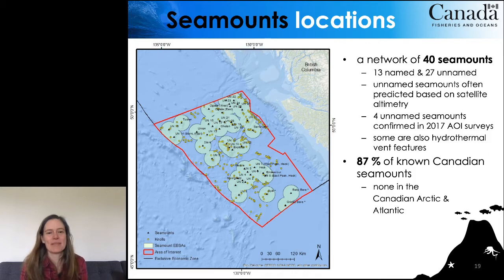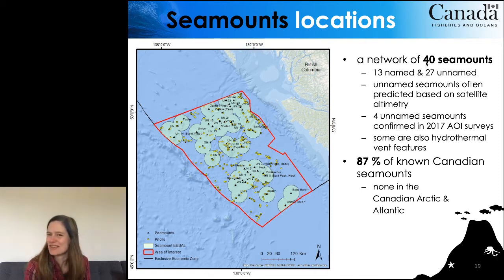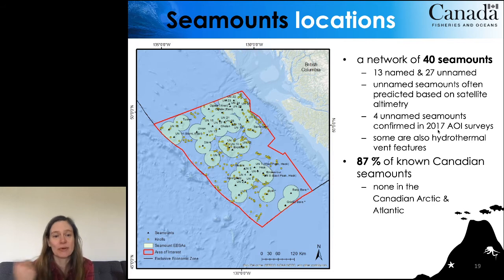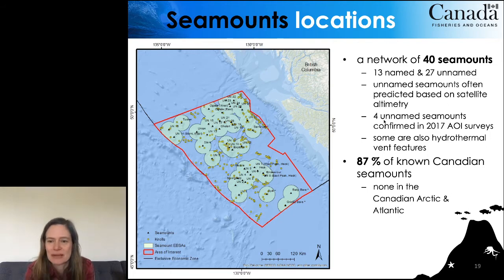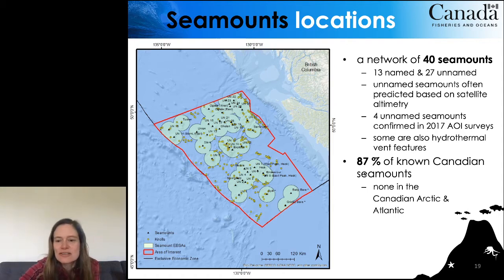This map shows the seamount locations — there's a network, and the number is always changing. Every time they go out surveying they find new seamounts; I think it's 47 now. In 2017 they found four more unnamed seamounts, and they've been out again in 2018 and 2019. This number — Canadian seamounts in other parts of the Canadian ocean — isn't really changing, because not many are being found elsewhere.